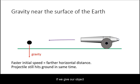If we give our object a faster initial horizontal speed, inertia will carry it farther, but still within the same amount of time it will fall to the ground.